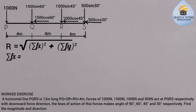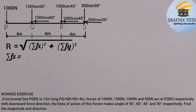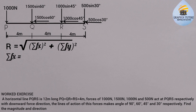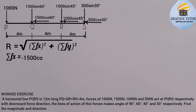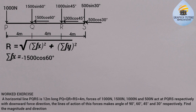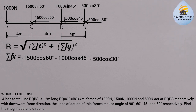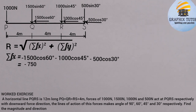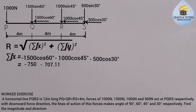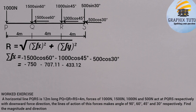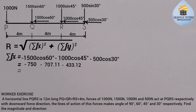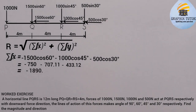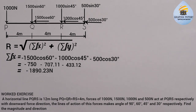For the summation of horizontal forces ΣFx, we bring all horizontal components together. We have −1500 cos 60°, −1000 cos 45°, and −500 cos 30° (negative because the arrows face backward). Calculating: −1500 cos 60° = −750, −1000 cos 45° = −707.11, and −500 cos 30° = −433.12. Adding these gives ΣFx = −1890.23 N. The negative sign means the force points in the negative direction.